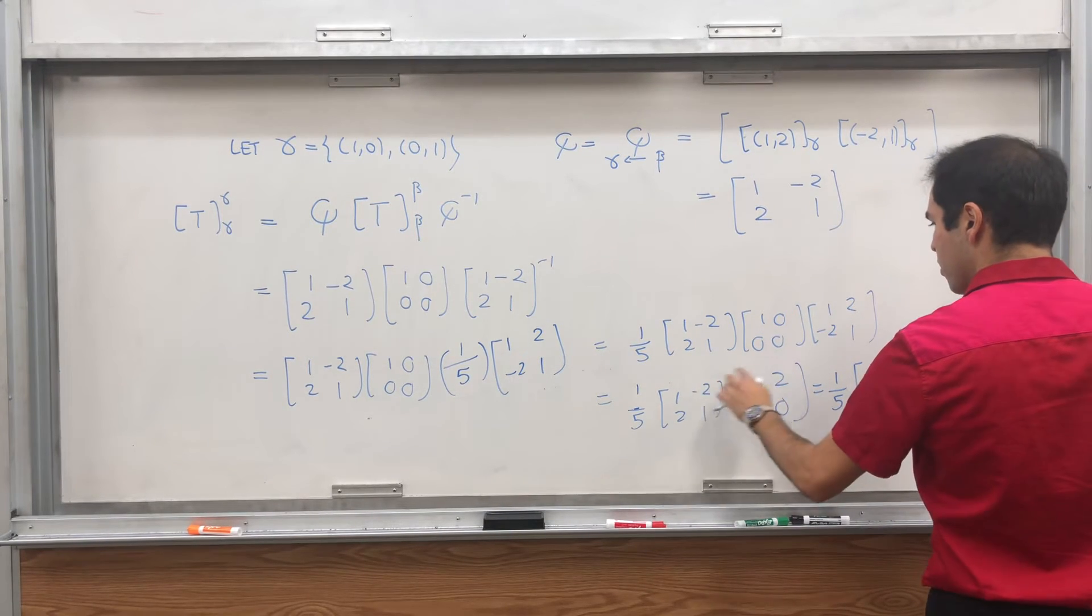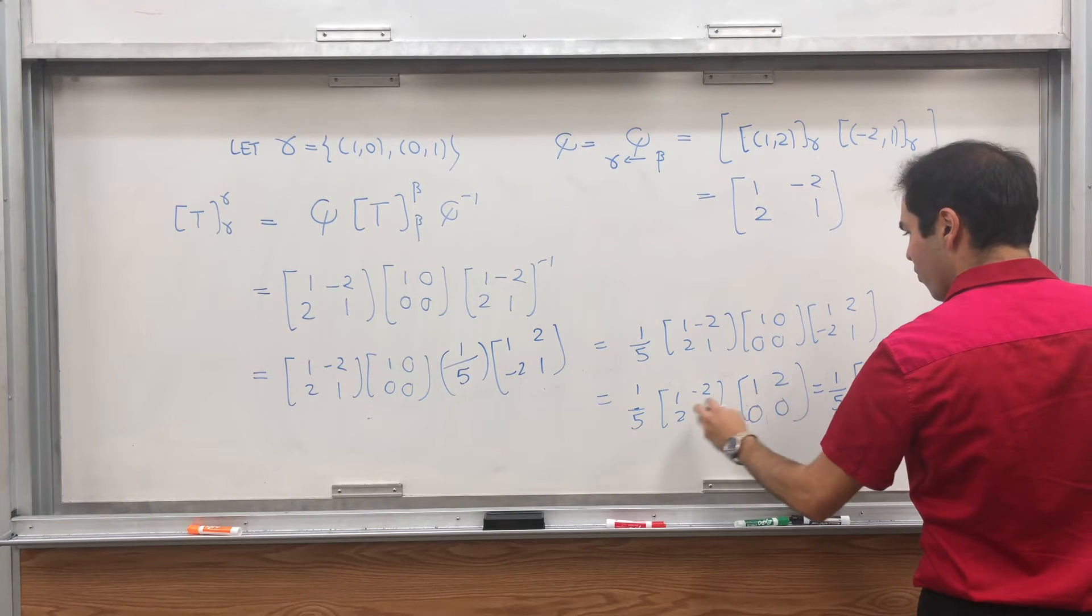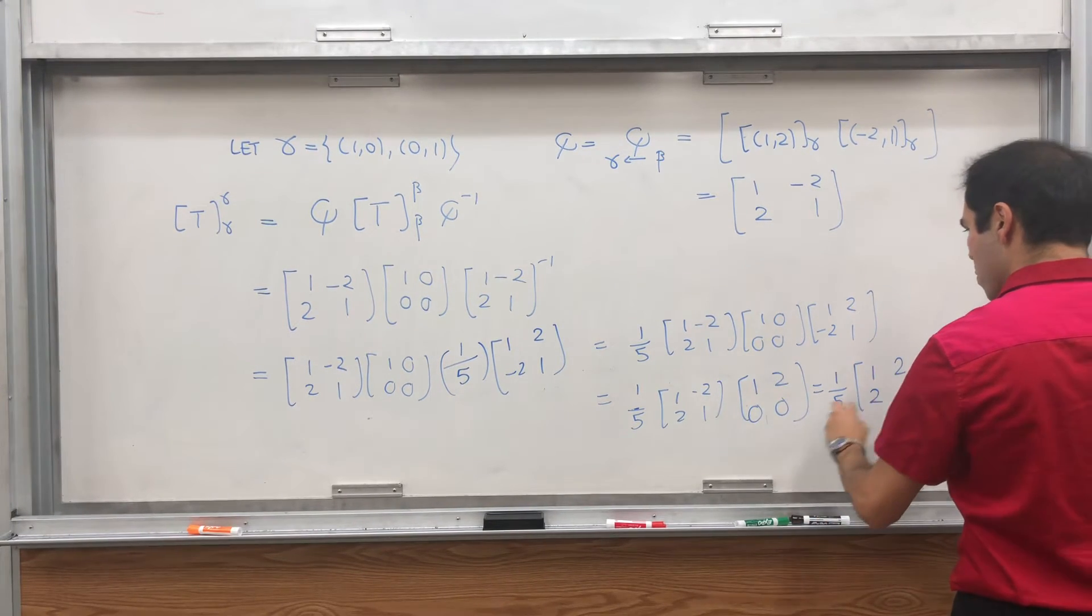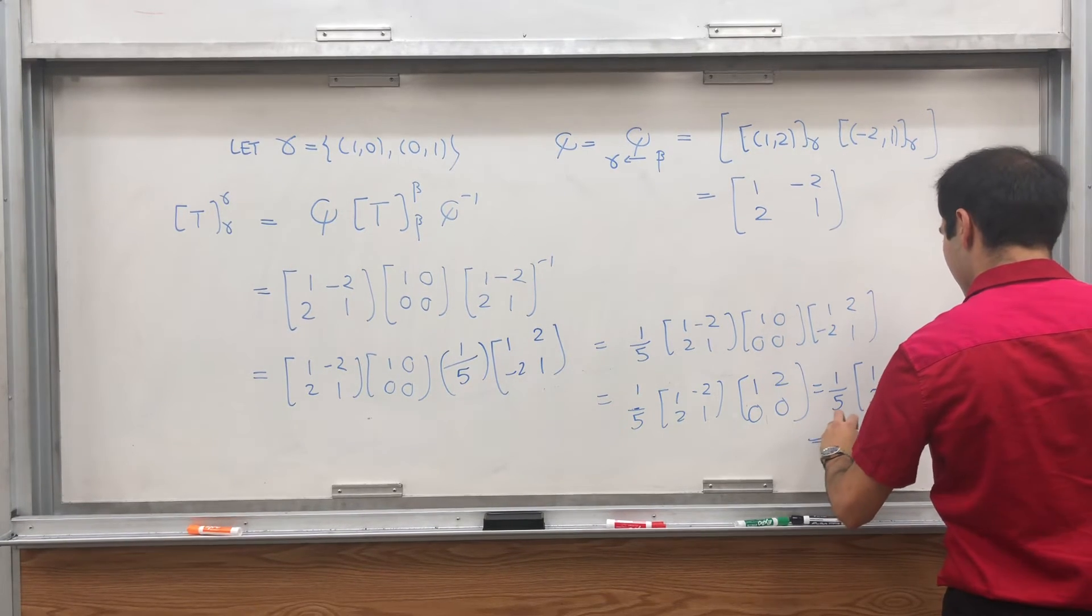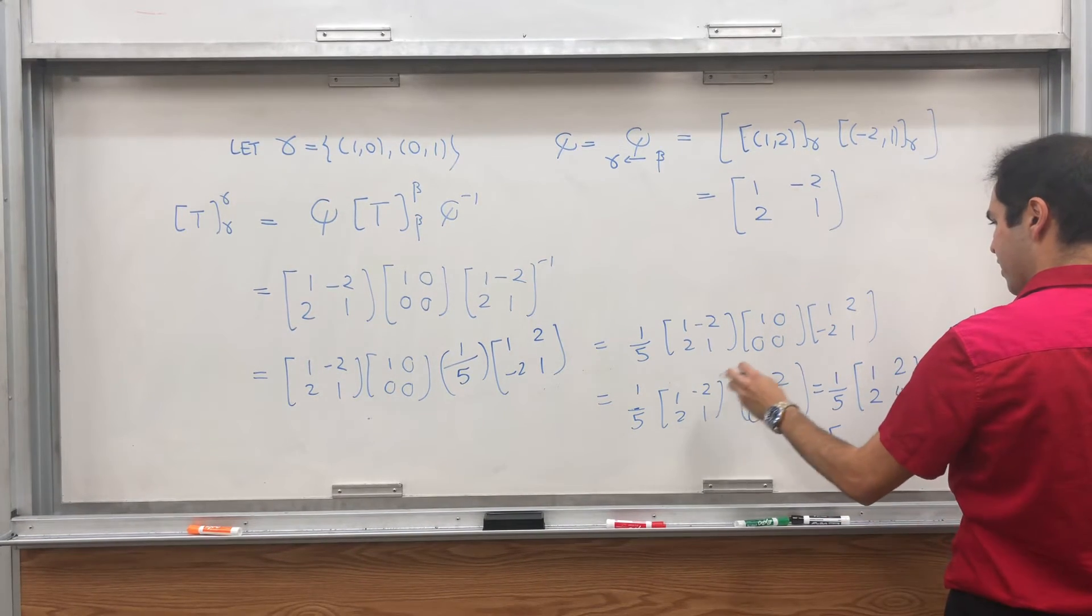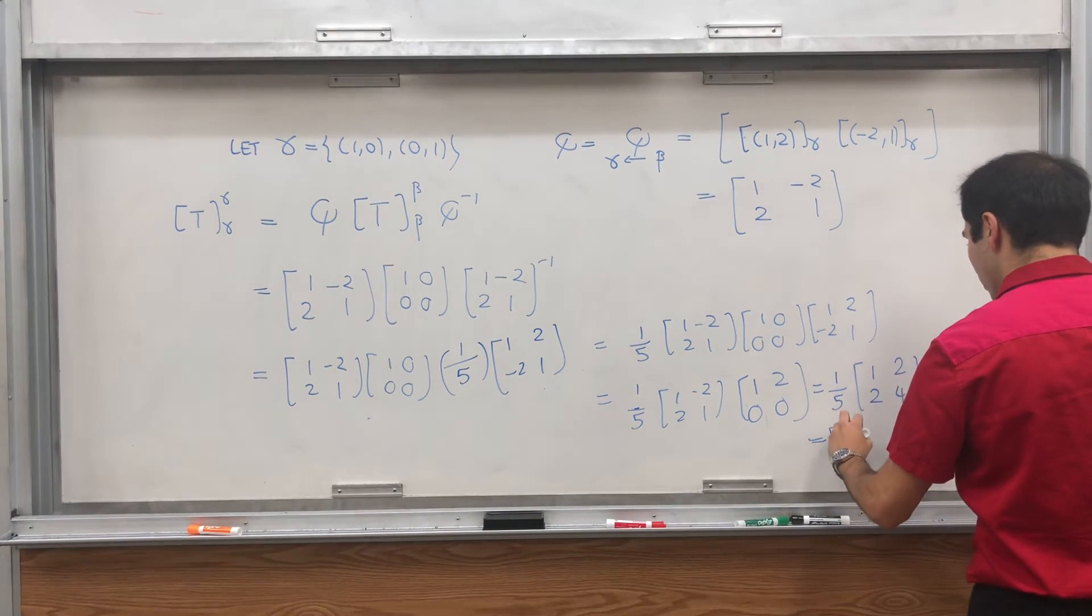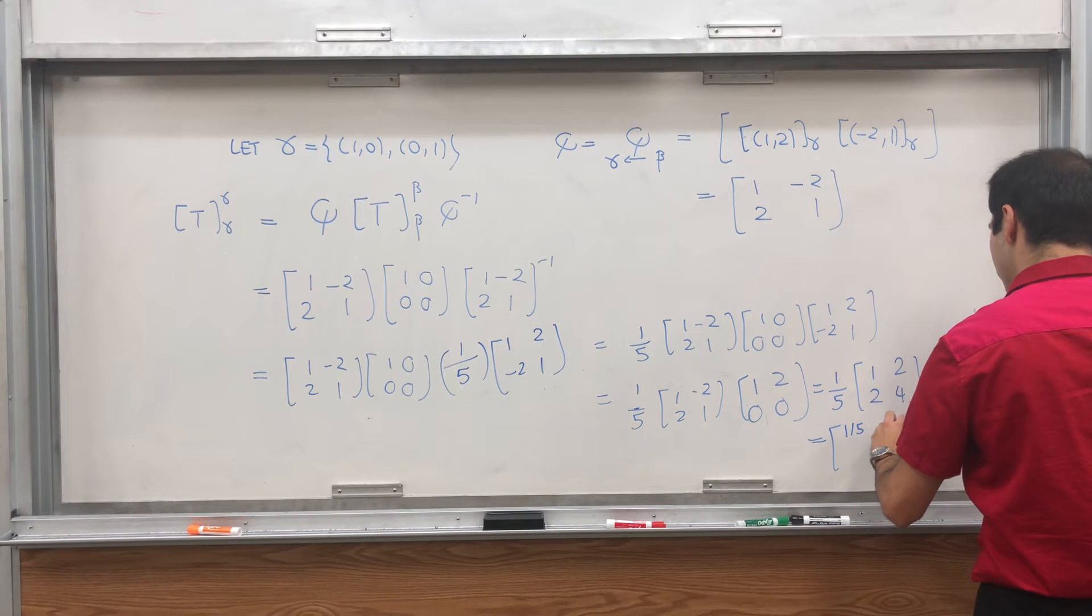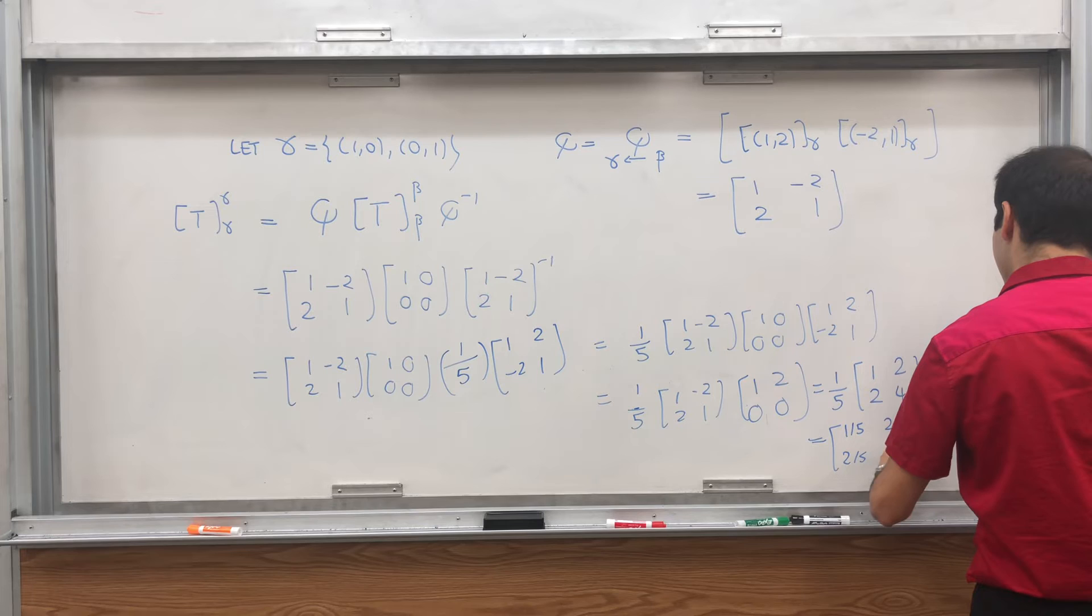So 1 fifth times, so 1, 2, and then 2, and then 4. I think it's correct, 2, and then 2, 4. And then that just becomes 1 fifth, 2 fifths, 2 fifths, and 4 fifths.